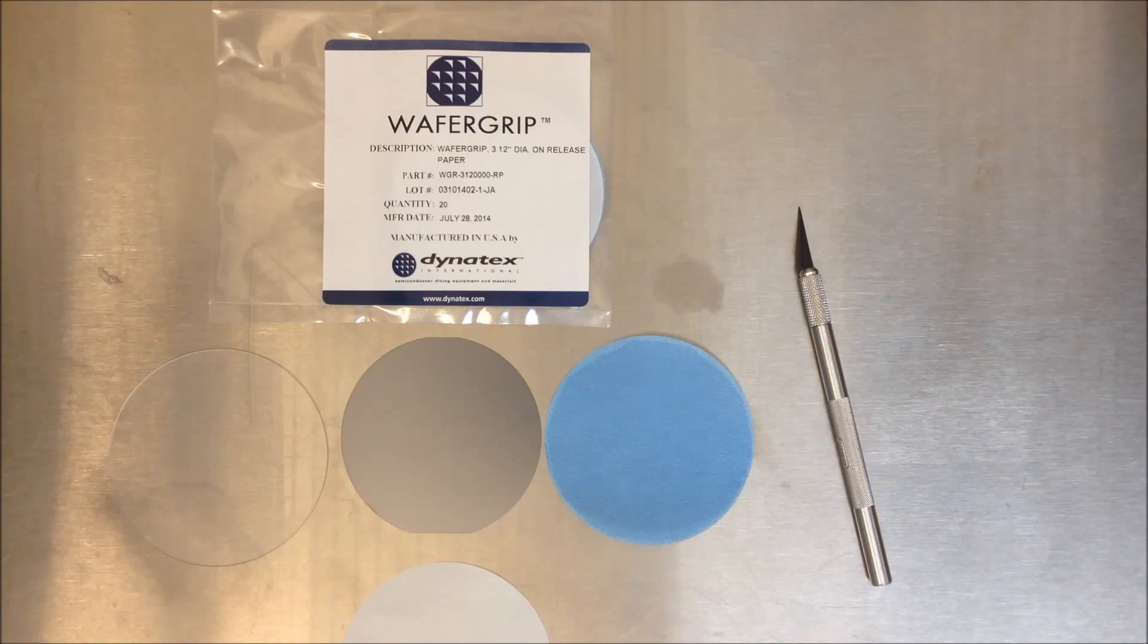Today I'm going to show you how to apply wafer grip. Wafer grip is a temporary adhesive used for bonding semiconductor wafers to substrates or handle wafers. It's a relatively simple process with a little bit of practice you can become quite skilled at it.